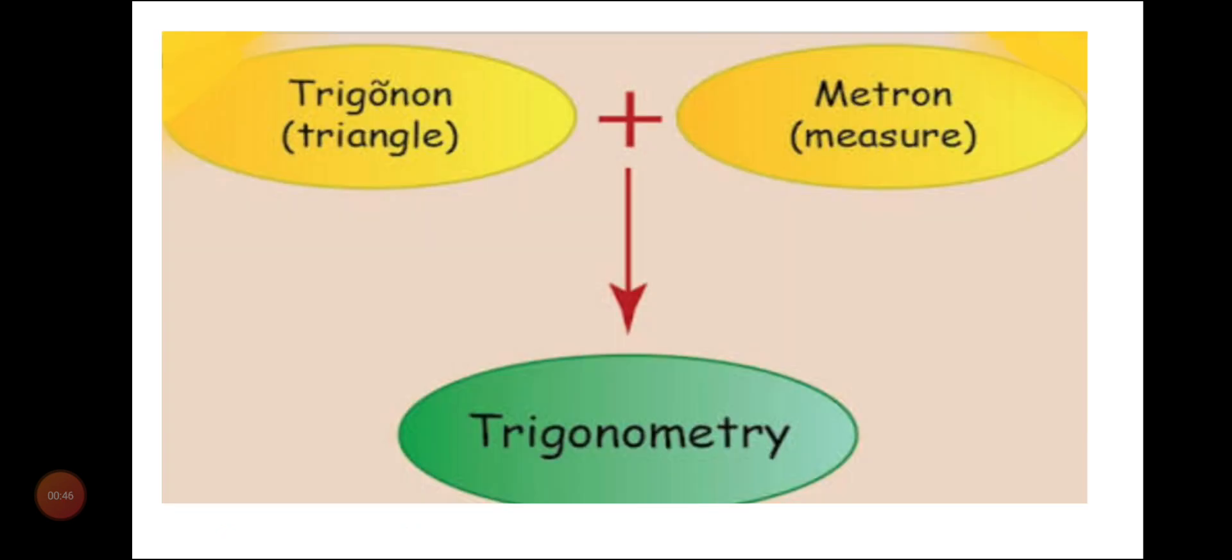Dear students, what does this Trigonometry mean? This Trigonometry word is obtained from two words. One is triangle and the other is measure. Triangle which we call it as Trigonon and Metron means measure. So this chapter, this word Trigonometry is meant for right triangles and to measure its three angles or three sides.